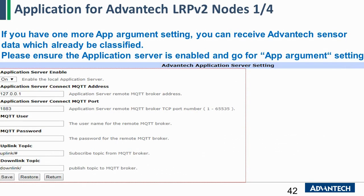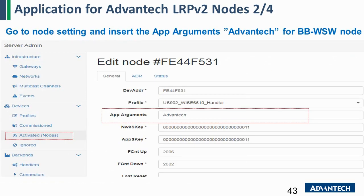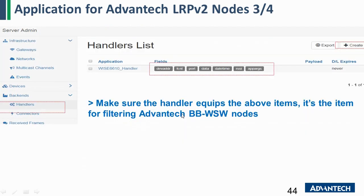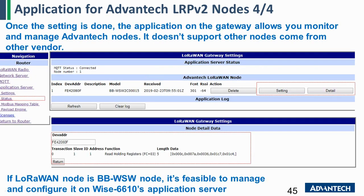If you are using our BB-WSW node series, we have created another application server to show the current status in our UI. Go to the application server page, enable the application server, and subscribe to the topic from the MQTT broker. Then go back to the node settings and insert one of the ABP arguments for the BB-WSW series — the argument is 'advantage'. Then go to the handler to verify it includes all the required information fields. After all settings, you can see the status and data on our LoRaWAN application server status page.